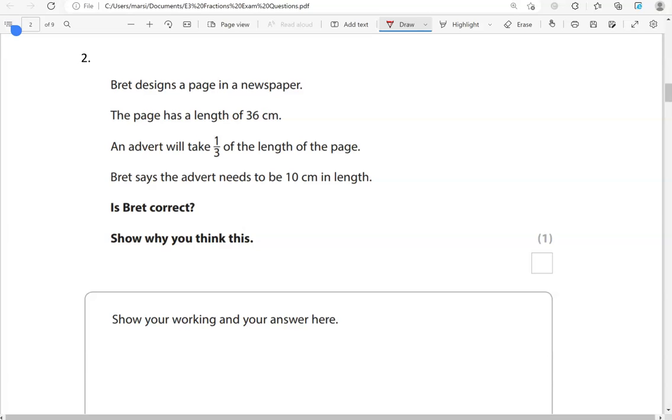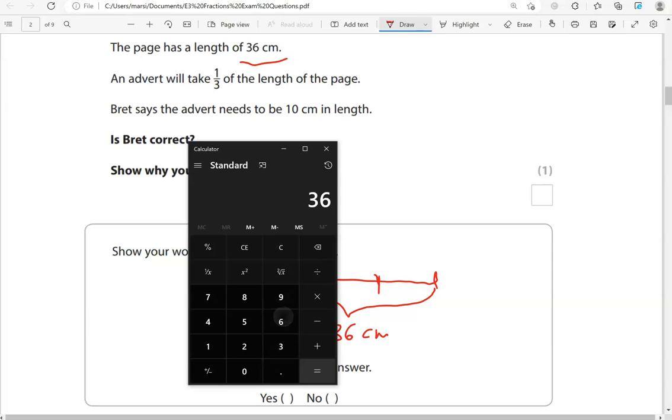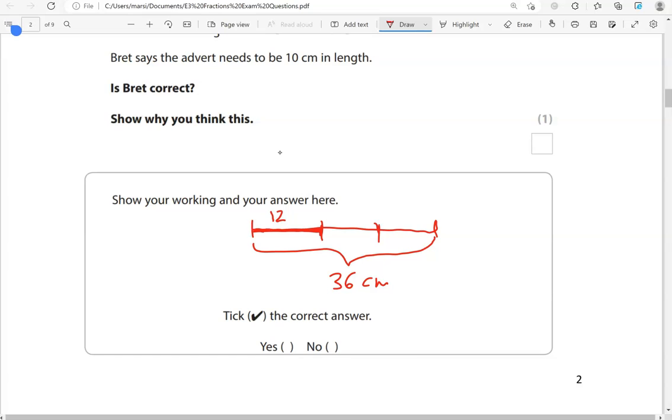Brett designs a page in a newspaper. The page has a length of 36 centimeters. An advert will take one-third of the length of the page. Brett says the advert needs to be 10 centimeters in length. Is Brett correct? If the page has a length of 36 centimeters, one-third will be 36 divided by 3. So 36 divided by 3 gives us 12, not 10. So is Brett correct? We're going to say no.